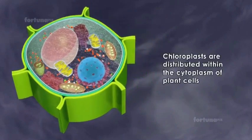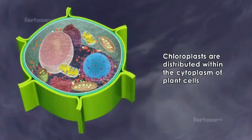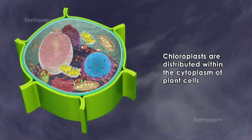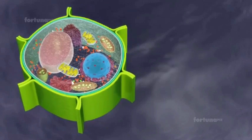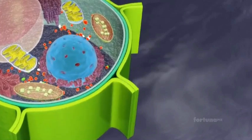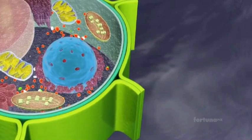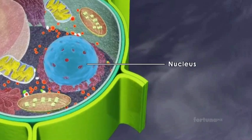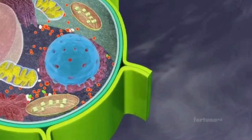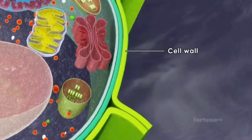Chloroplasts are distributed within the cytoplasm of plant cells. In some cells they are concentrated around the nucleus or just beneath the cell wall.